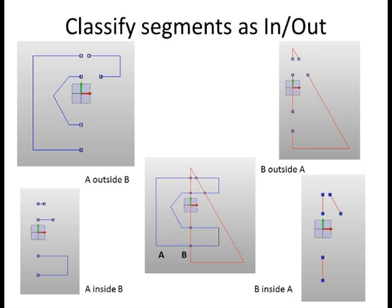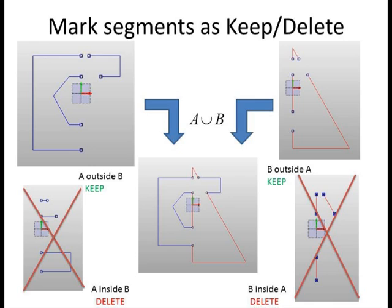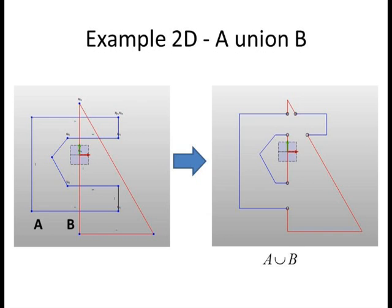And finally, since we are doing a union operation, we want to keep the segments of A outside B and B outside A, and discard the segments of the other two groups. When we put the kept segments together, we get the new profile shown here, which is the correct result of the operation A union B.